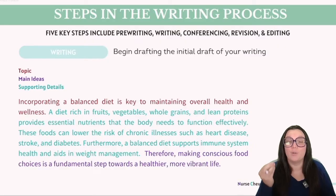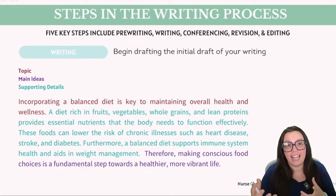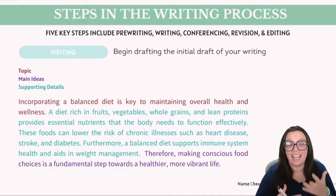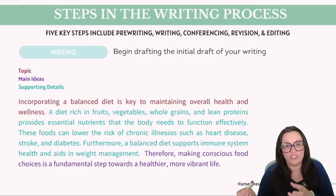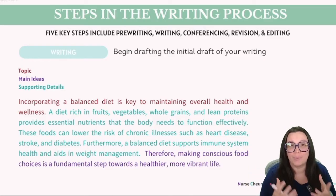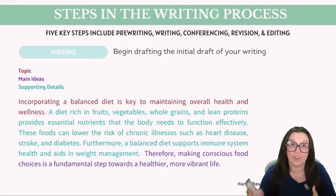Step two in the writing process is writing. You're going to create your first draft and it doesn't have to follow a strict sequence. You might find it effective to start with the body of your text, leaving the introduction until later when you have a better understanding of what you're introducing. Leverage your outline as a structural guide. Begin crafting each paragraph methodically: start with a topic sentence introducing the main idea, present supporting evidence, explain and analyze that evidence, and conclude by summarizing what your analysis infers or proves. The primary objective in this phase is to complete a draft, after which you can focus on refining and enhancing your work.